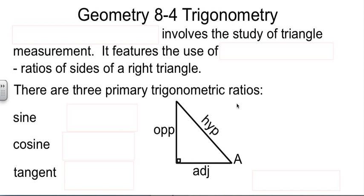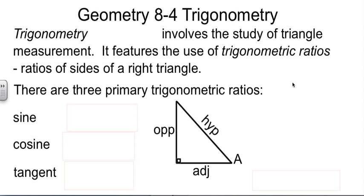This is Geometry Chapter 8, Section 4, in which we will be studying trigonometry. Trigonometry is triangle measurement. What we use in trigonometry are trigonometric ratios - ratios of the sides of a right triangle. Later we'll use trig where it's not a right triangle, but for now we're focusing on right triangle trig.